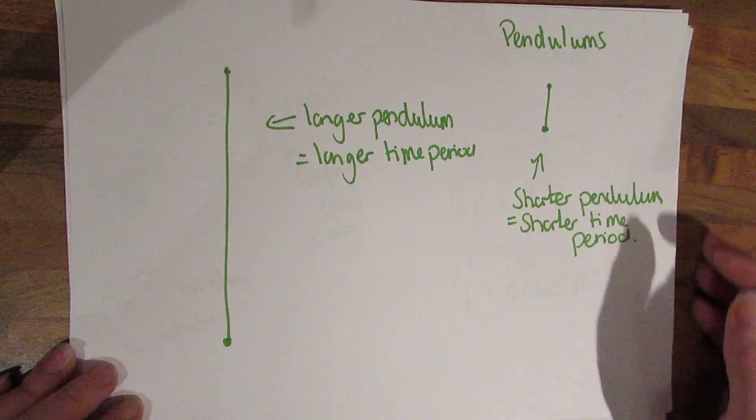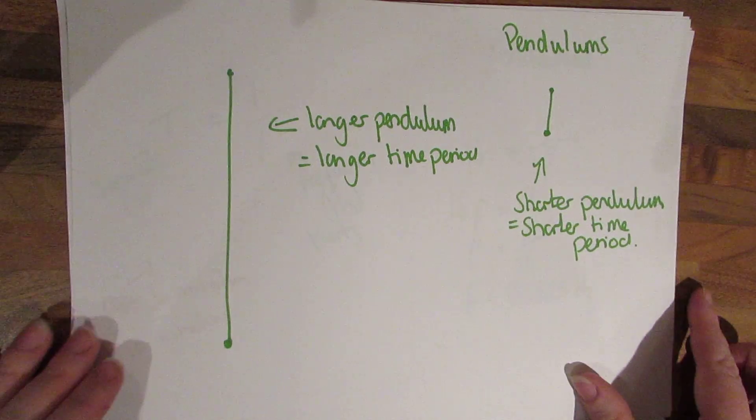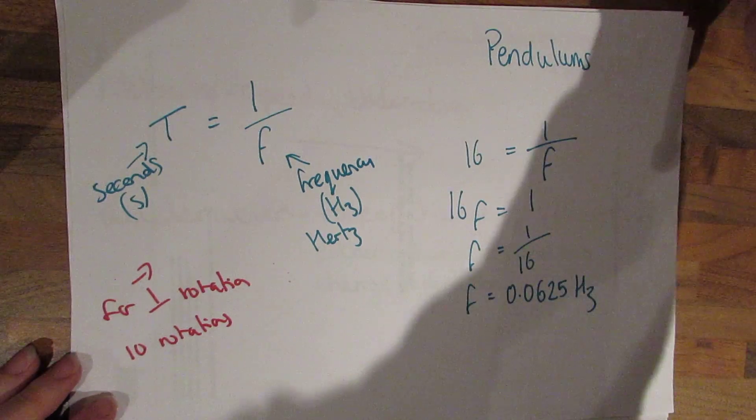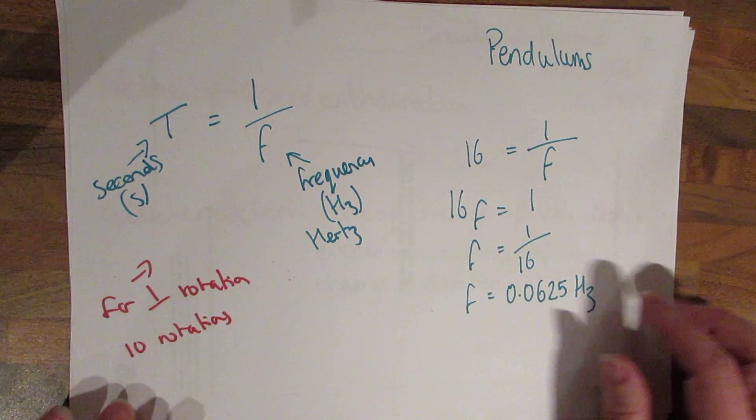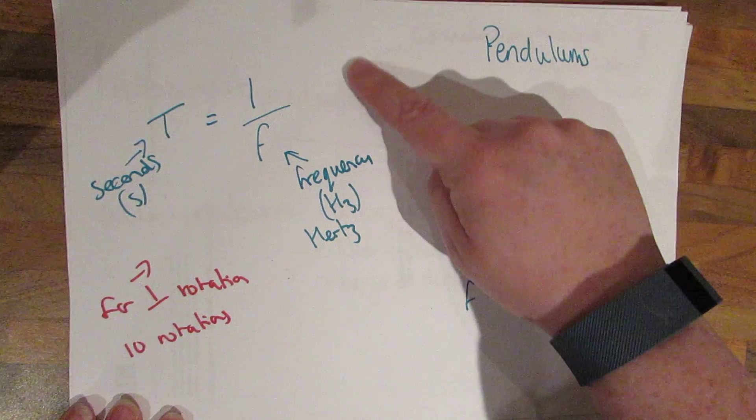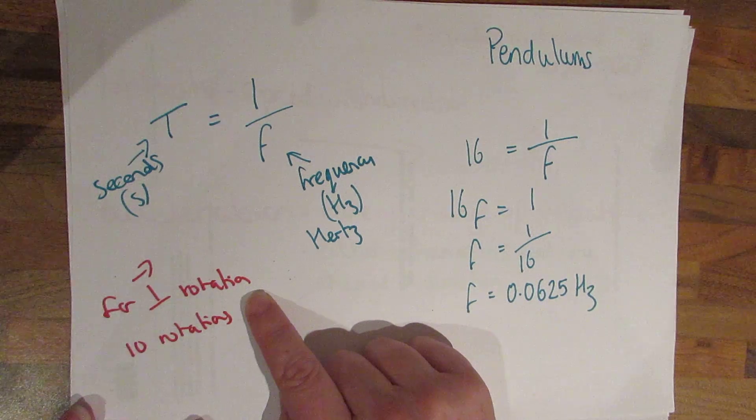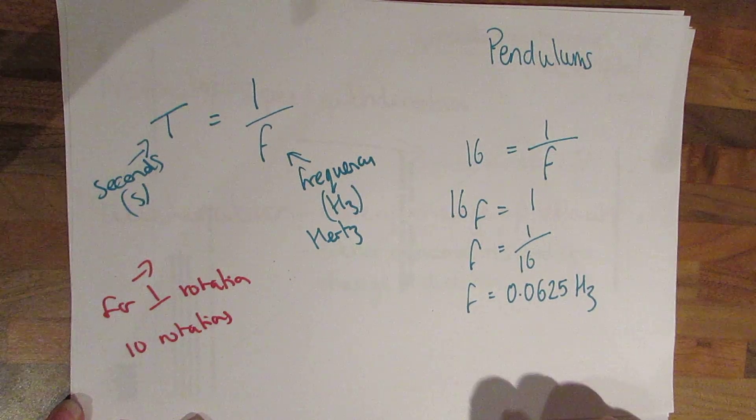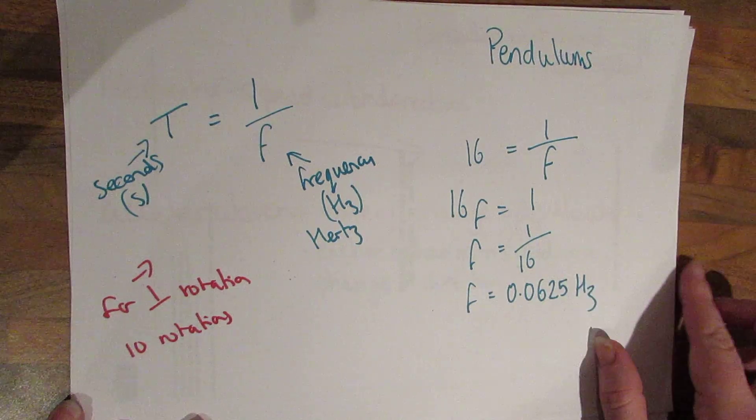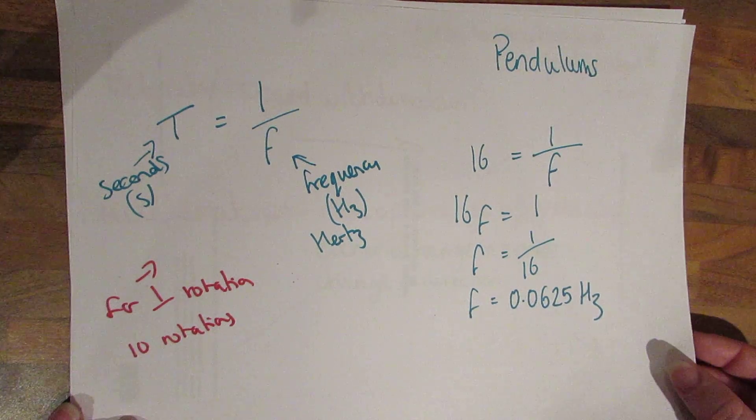So pendulums now. You should know that a longer pendulum has a longer time period and a shorter pendulum has a shorter time period. This is the equation that we're going to be using, so time in seconds equals one divided by the frequency which is in hertz. This is for one rotation, so if the exam question gives you a number or asks you for a number in ten rotations, you have to make sure you scale it up and here is just a quick example for you.